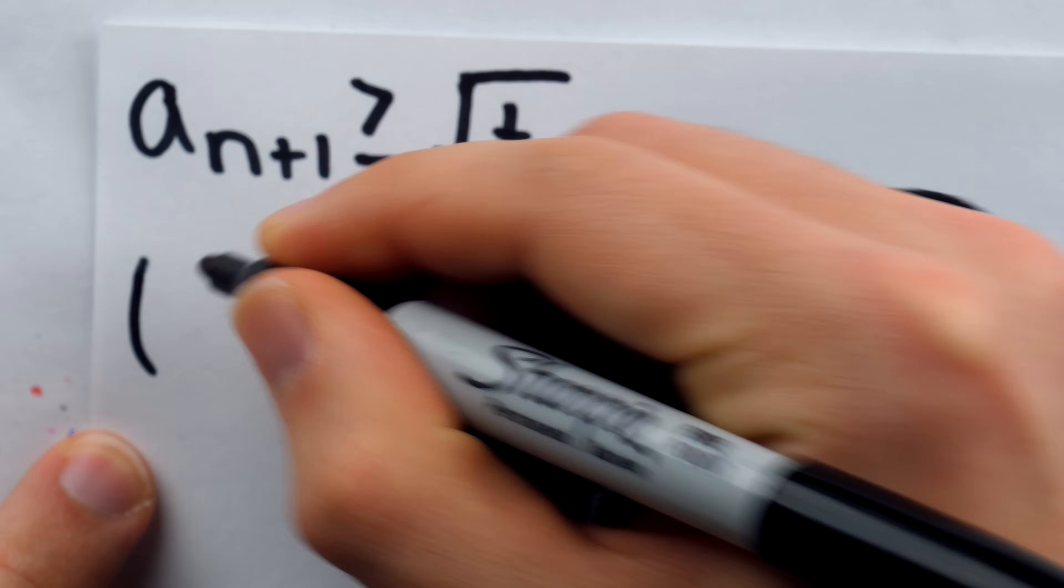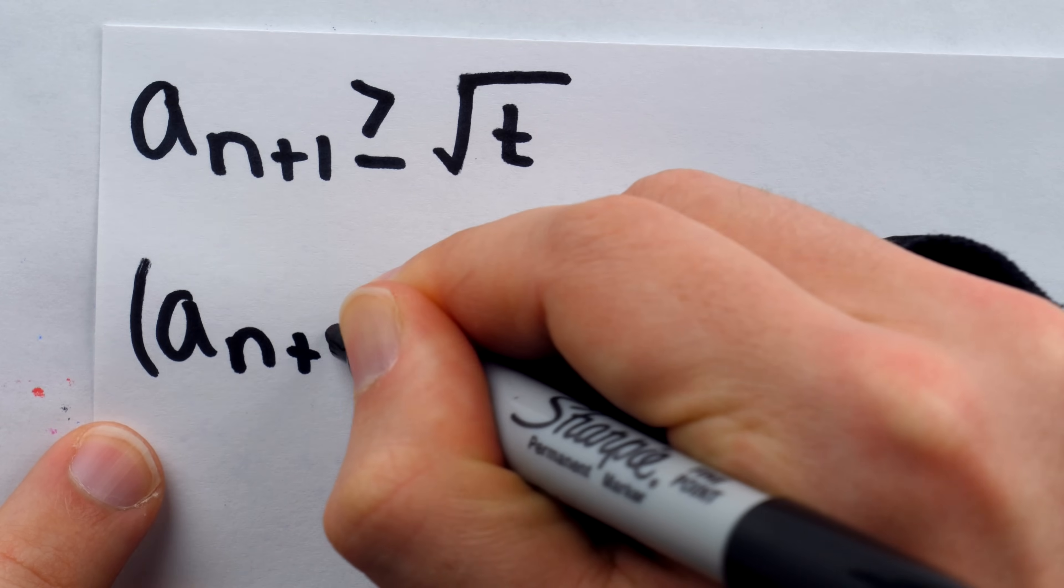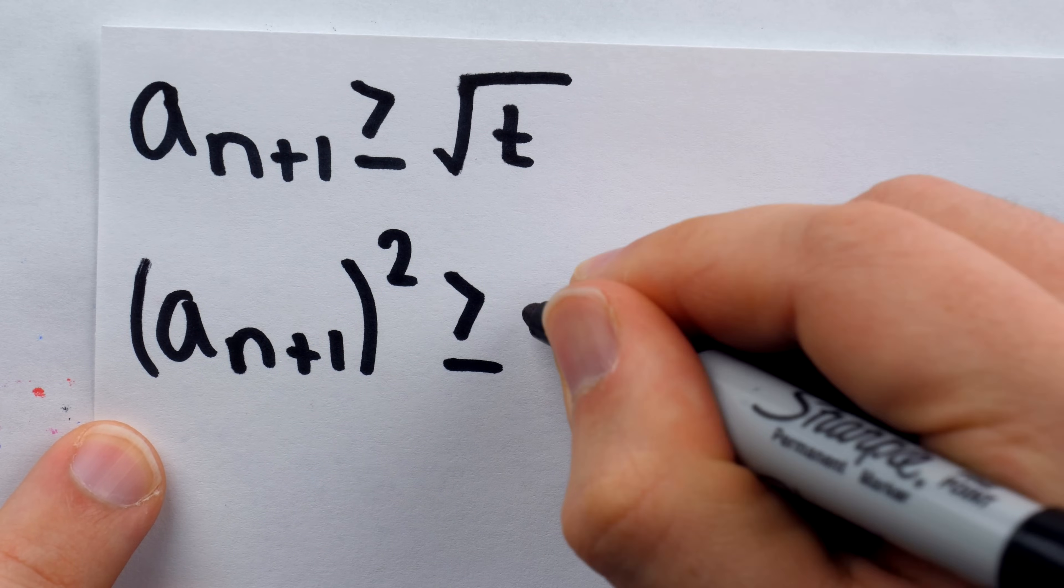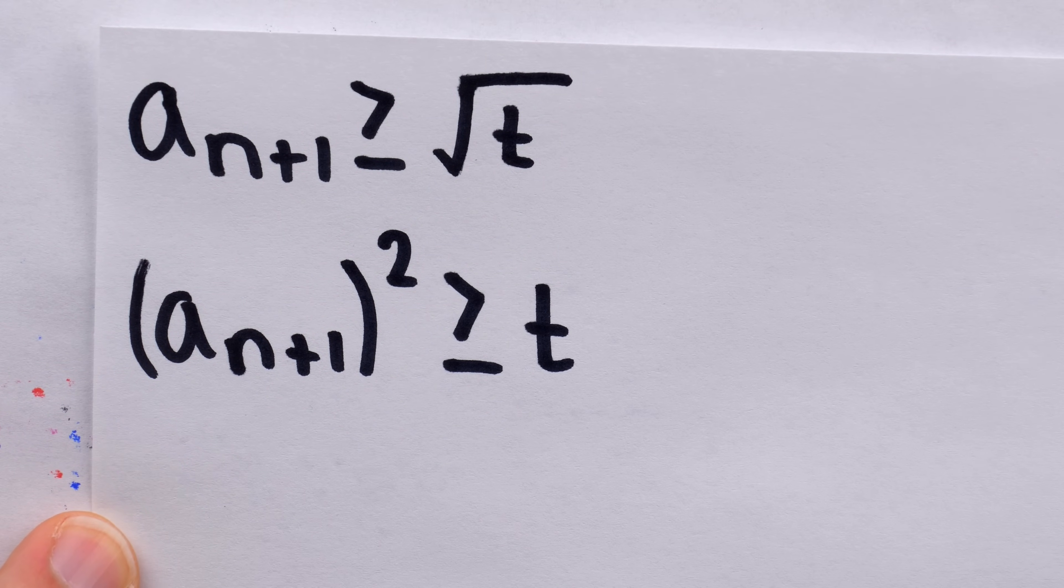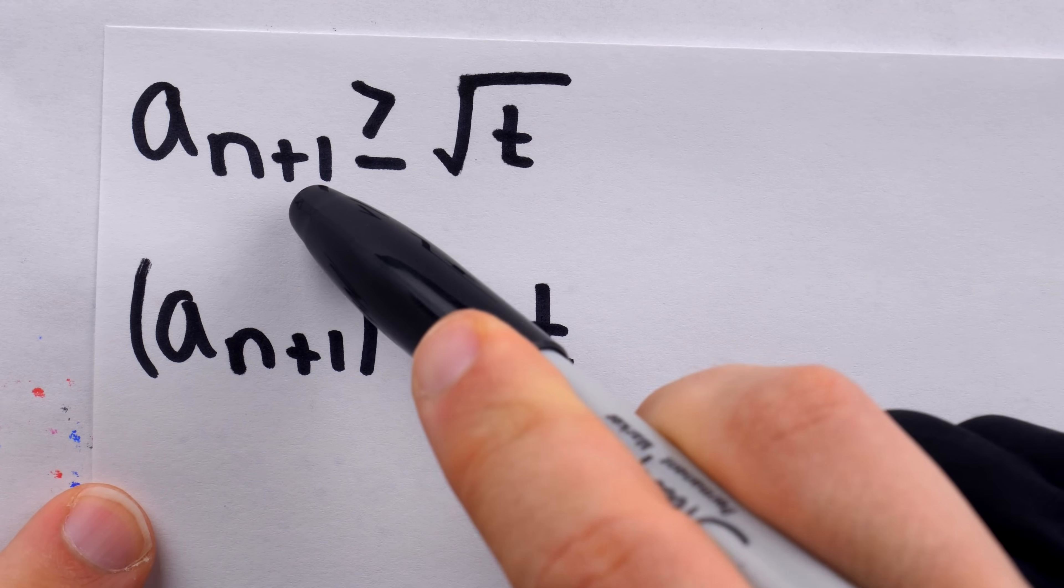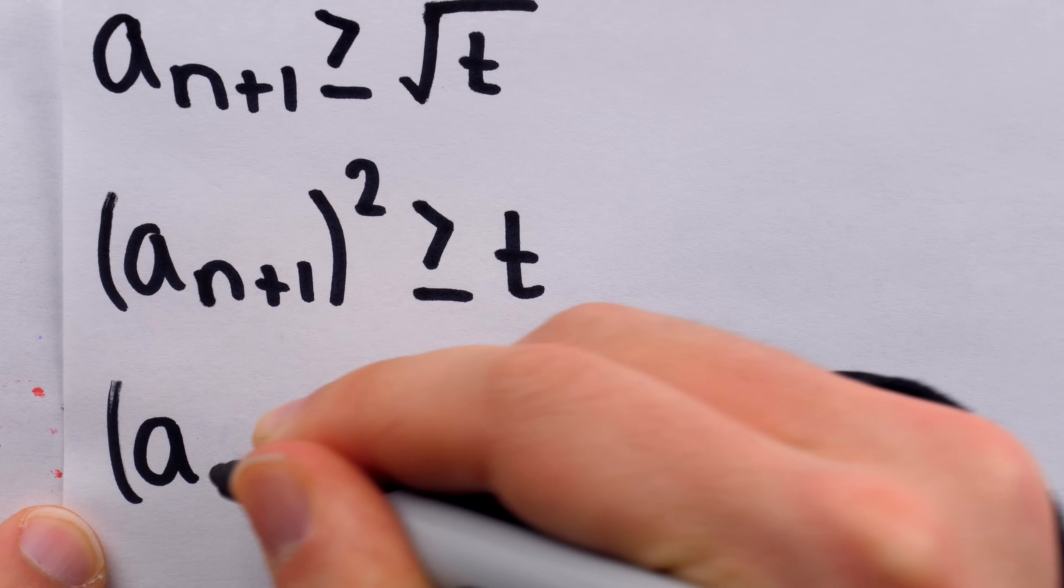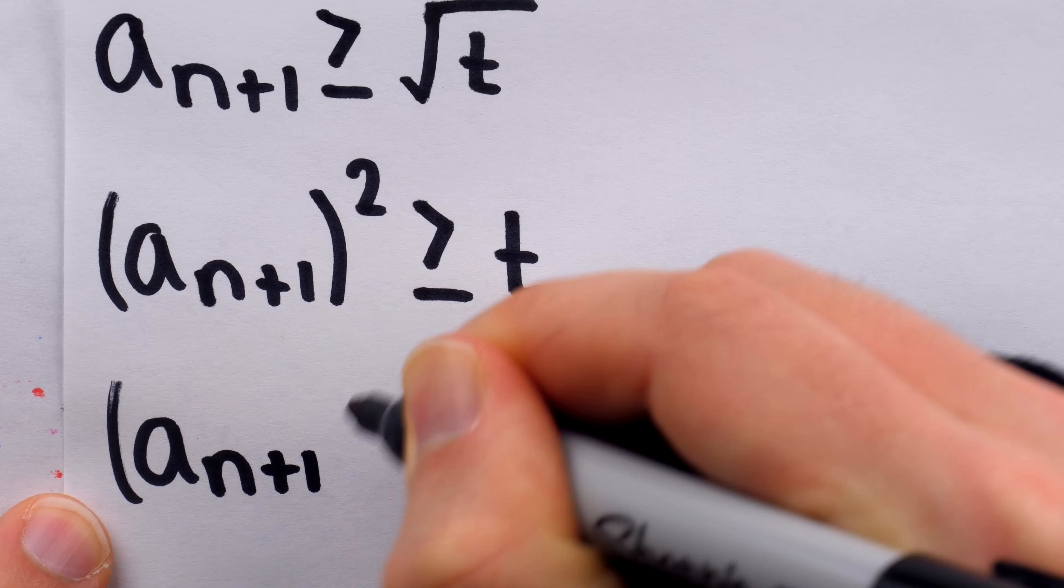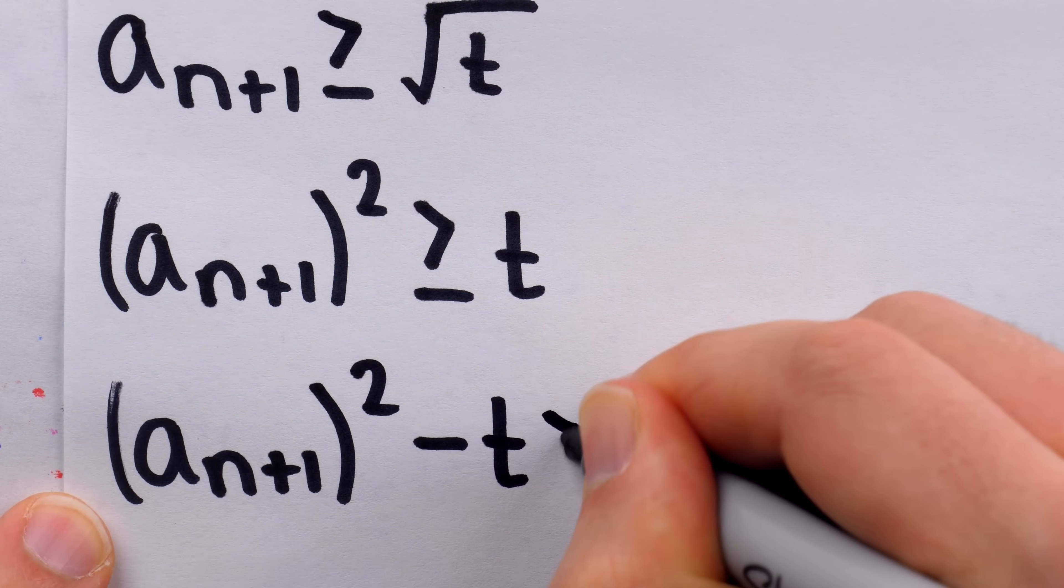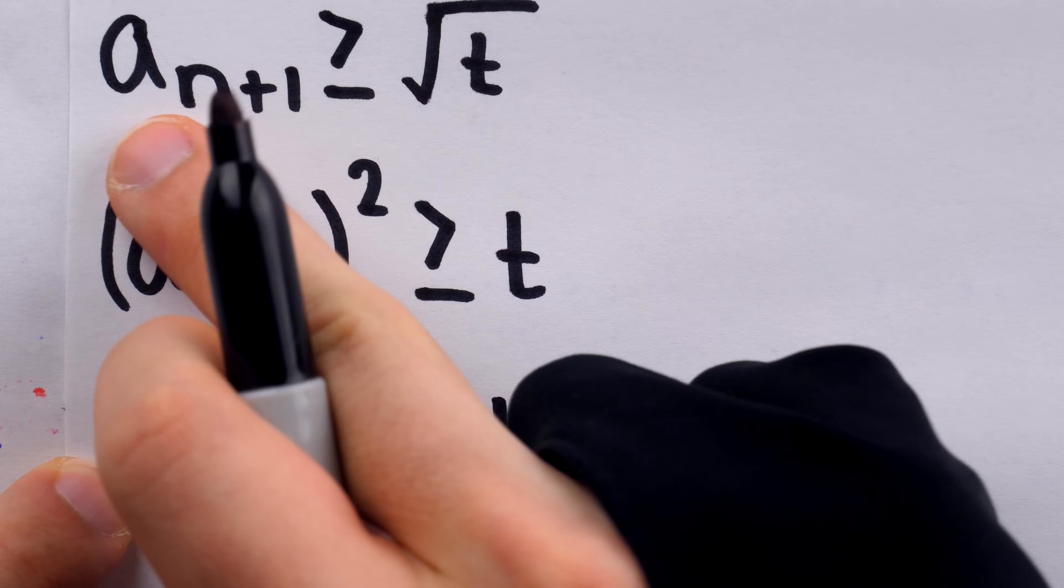This is the inequality we want to prove, but it will be useful to play with it a little bit. We're going to square both sides. So, we have that a n plus 1 squared is greater than or equal to t. And remember, throughout this proof, that all of these named numbers like t and a n, a n plus 1, all of those numbers are positive. Now, subtracting both sides from this inequality, we get that a n plus 1 squared minus t is greater than or equal to 0. And this is what we're going to prove, which is equivalent to this original inequality.